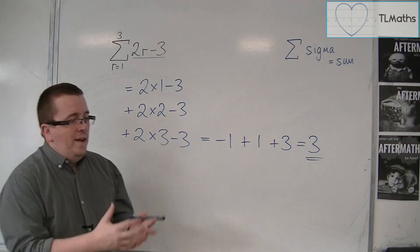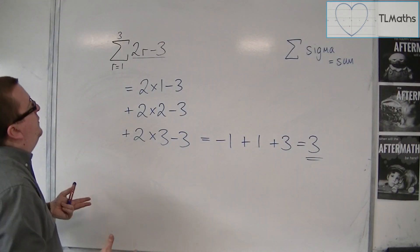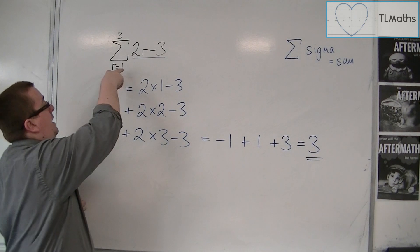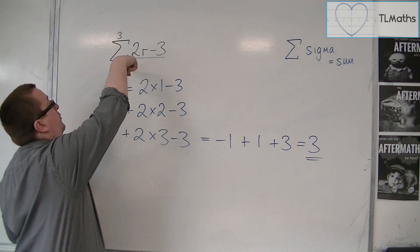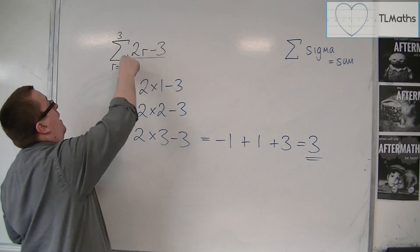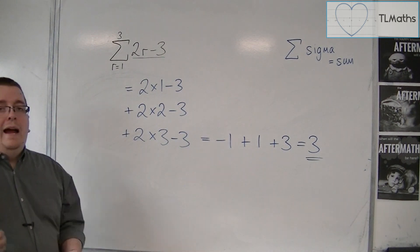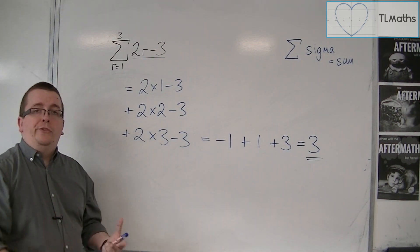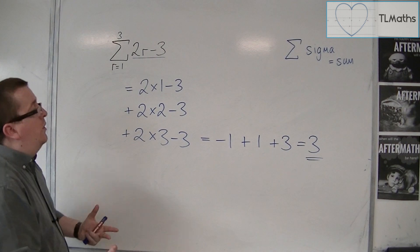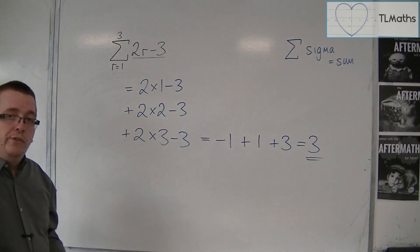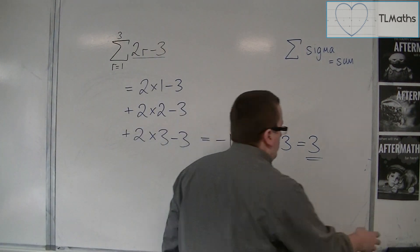So effectively, what sigma notation is saying is substitute in all of the whole numbers between and including 1 and 3, and then add all the results together. That is what sigma notation tells us to do. Let's have a look at another example.